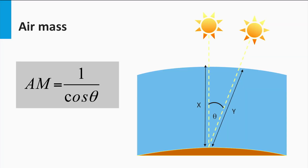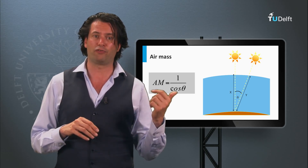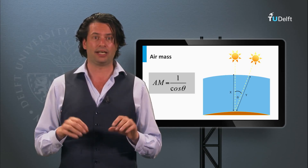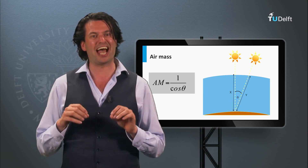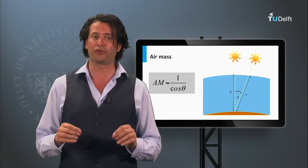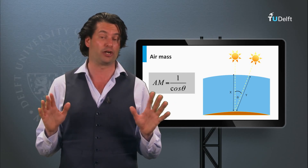The path length of light is defined by the optical air mass. An air mass of 1 corresponds to the smallest possible path length, which is the path length at the equator. An air mass of 1.5 means that the absorption path length is 1.5 times larger than that at the equator. The air mass can be calculated by the formula 1 over the cosine of theta, where theta is the latitude in degrees. An air mass of 1.5 corresponds to the average path length at a latitude of 48.2 degrees at noon, if we ignore the seasons.